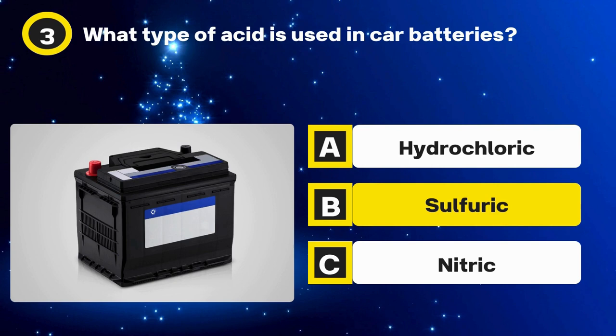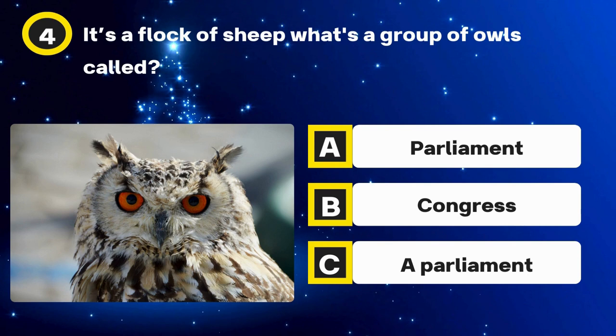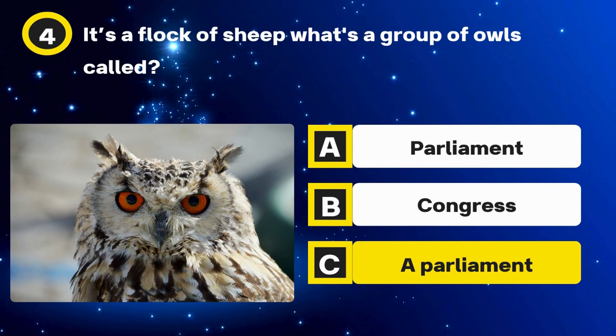Question 4. It's a flock of sheep — what's a group of owls called? Options: Parliament, Congress. The answer: A parliament.